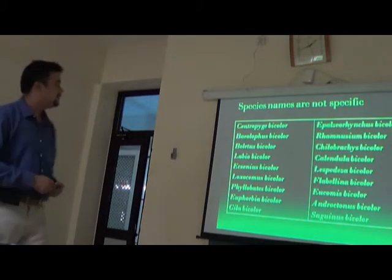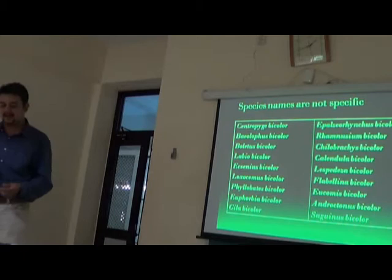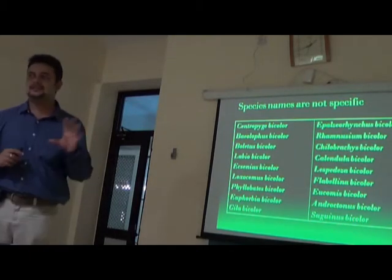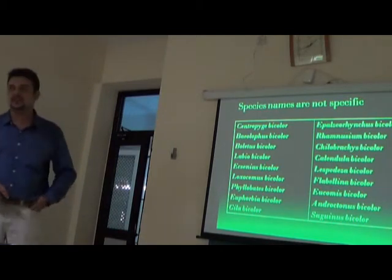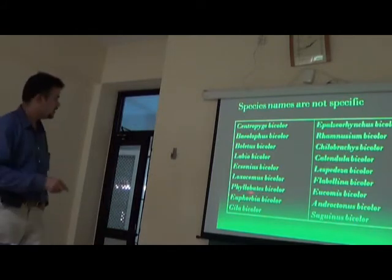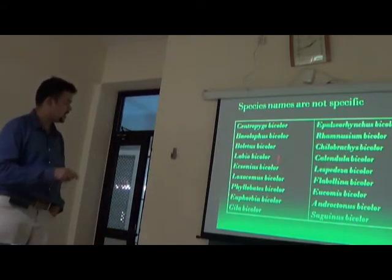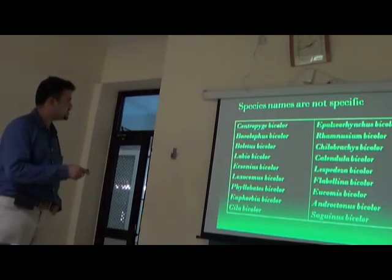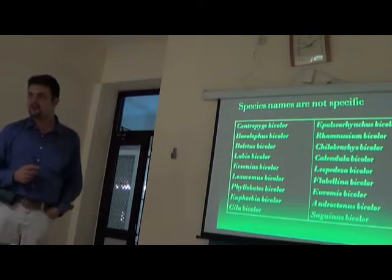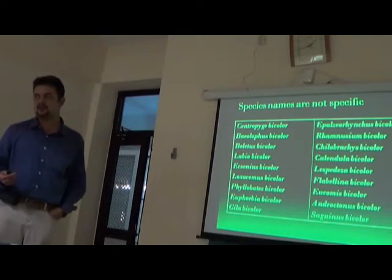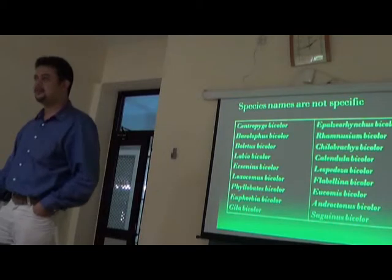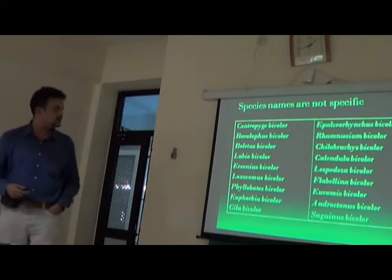This is the last slide from the last class. We were discussing species names — these are actually binomial or scientific names, of which the second part is the species name and the first part is the genus name. Genus names are very specific, while species names are not — unrelated species could have the same species name. In this case it is 'bi-color,' meaning two colors in Latin.